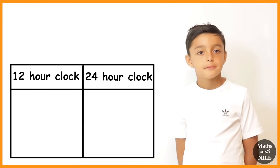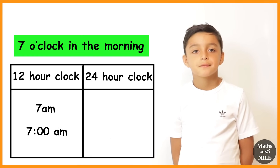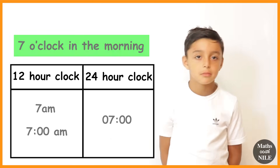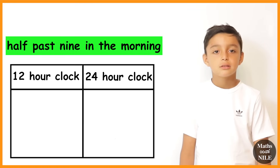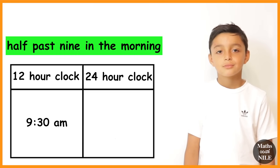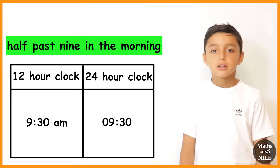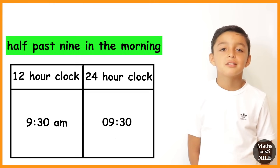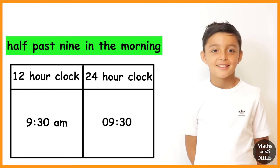So how would you say 7 o'clock in the morning on a 12-hour clock? 7 a.m. And on a 24-hour clock? 0700 hours. How would you say half past 9 in the morning on a 12-hour clock? 9:30 a.m. And on a 24-hour clock? 09:30. And what's in between the 09 and the 30? A colon — the same colon we use in the 12-hour clock.